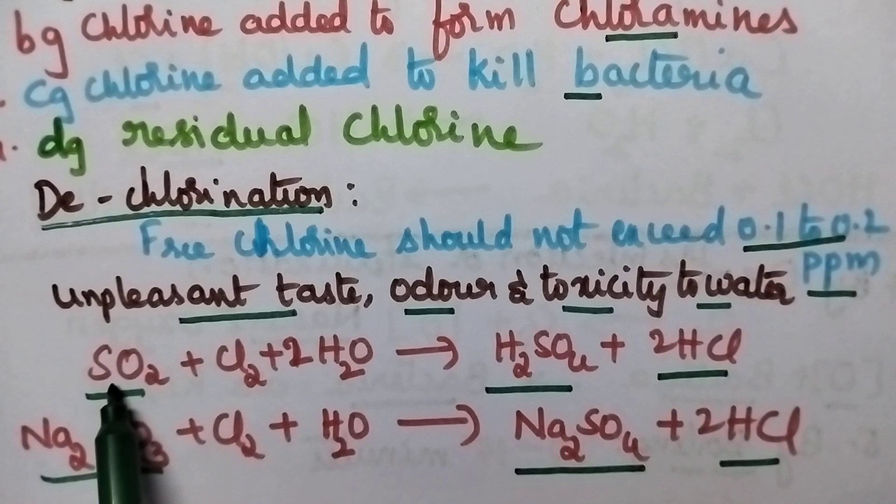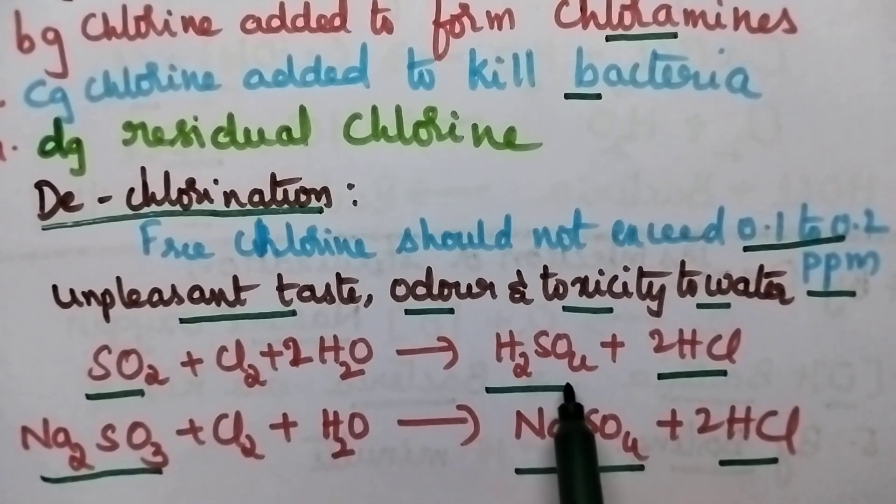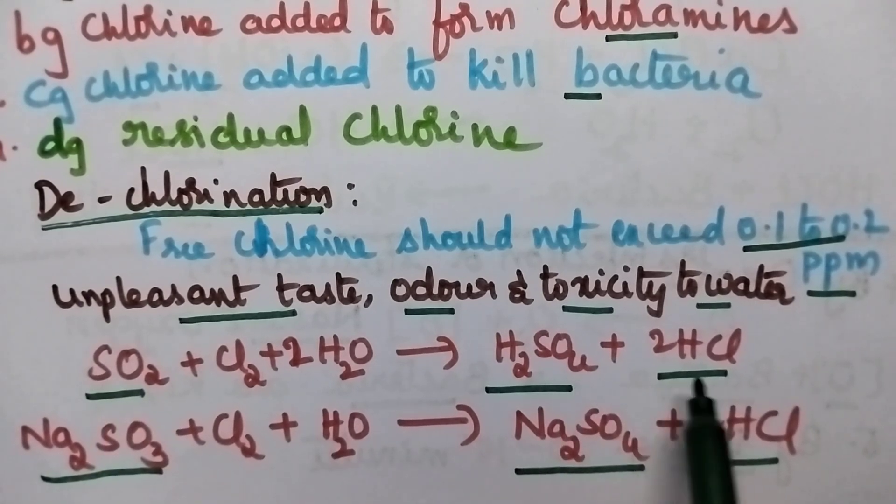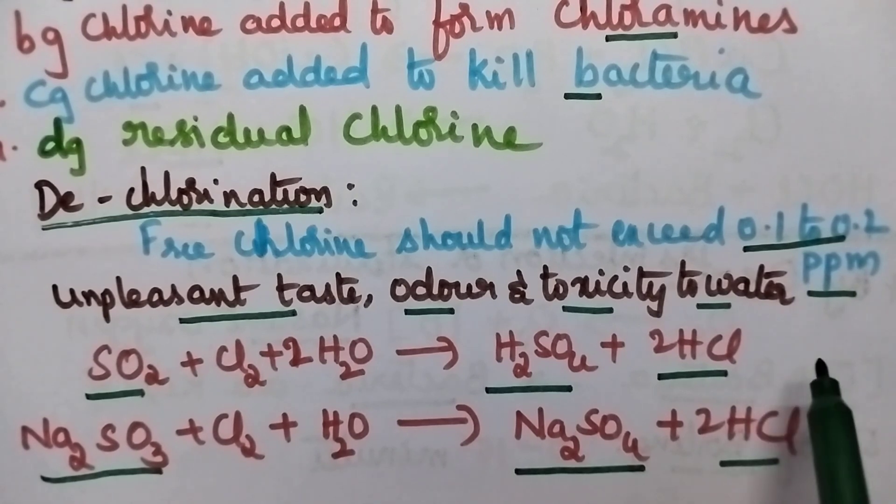Whenever it is treated with sulfur dioxide, it results in the formation of sulfuric acid and HCl, and thus excess free chlorine can be removed.